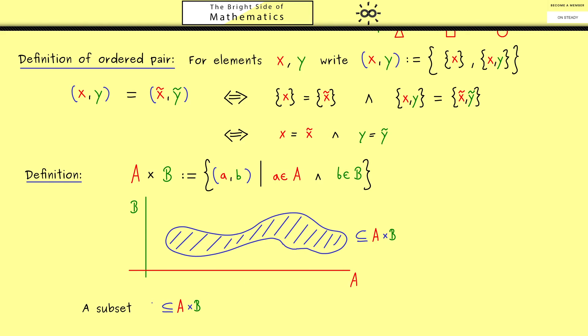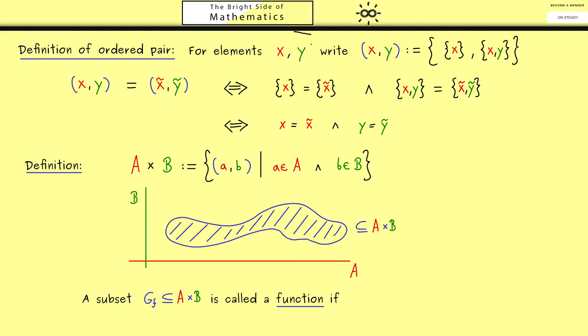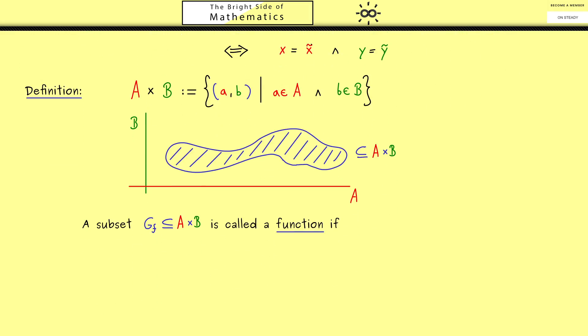So let's consider a subset which I call Gf, for reasons I explain later. And the subset is called a function if it fulfills something we call y-unique. Of course this is something we can describe by using quantifiers and the element set relation.